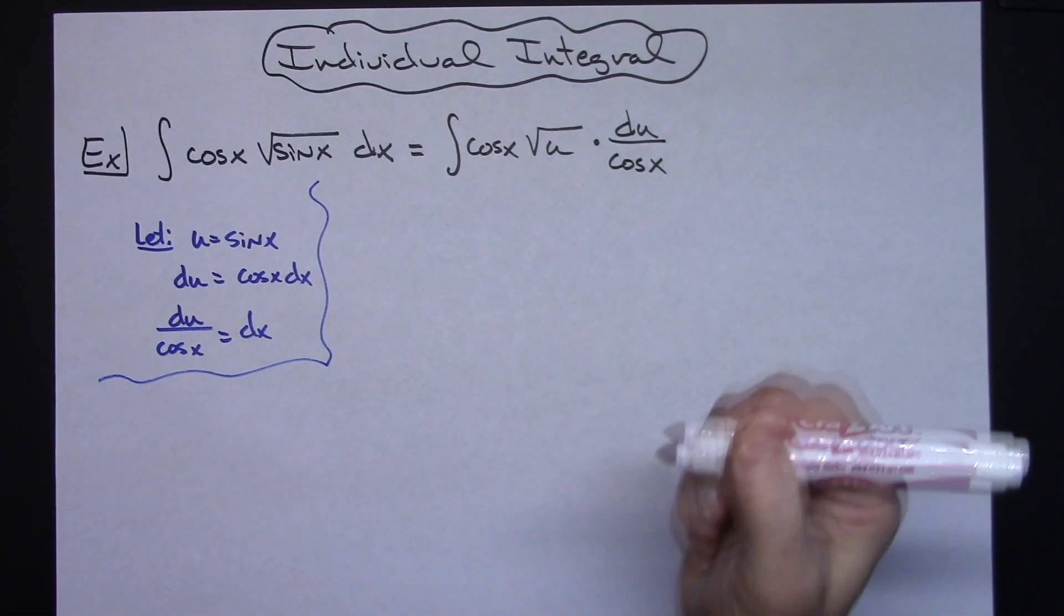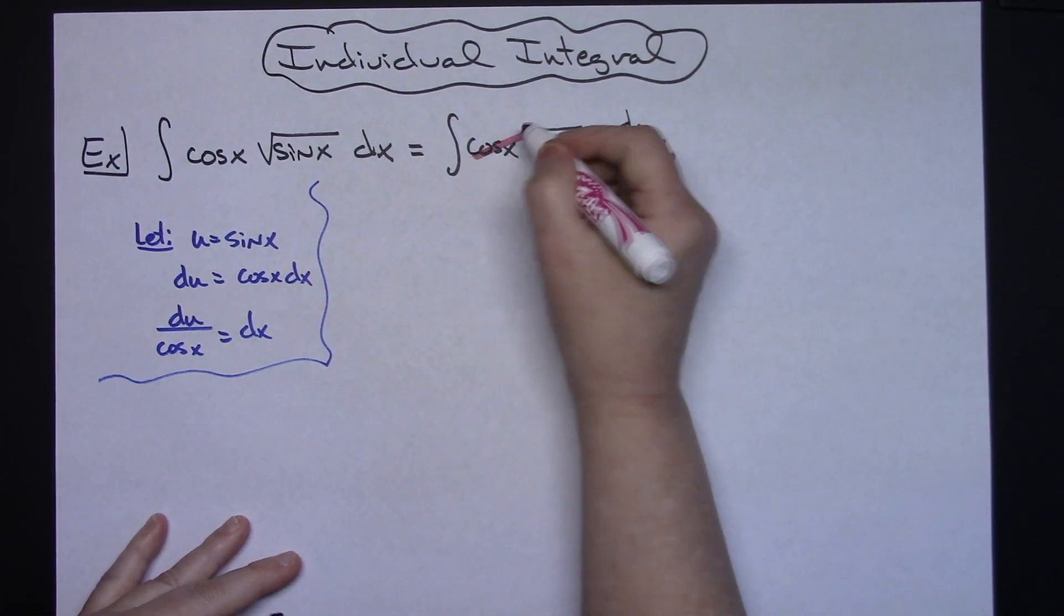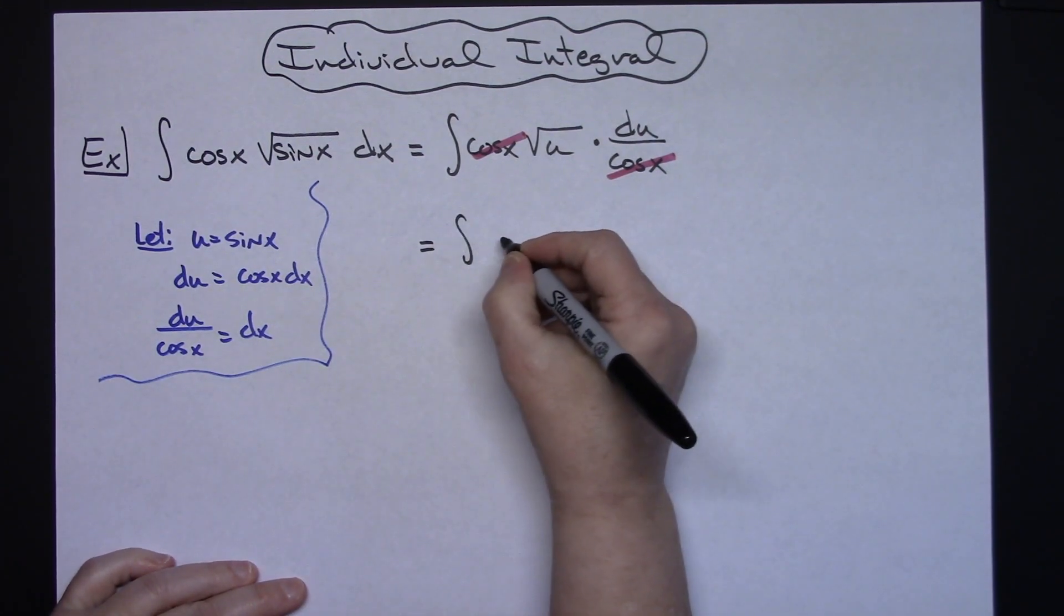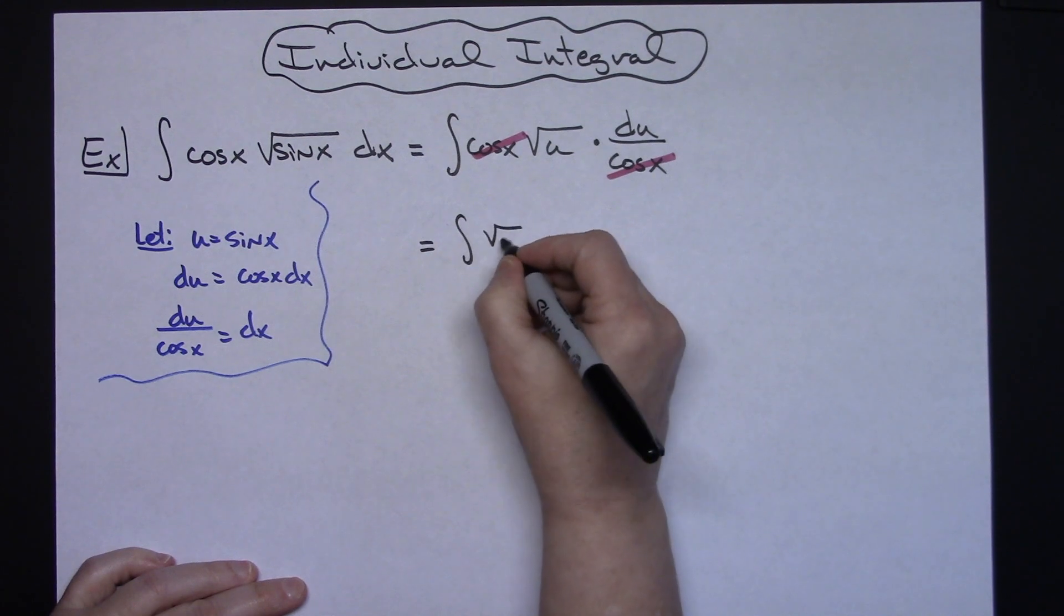That allows us then to cross out those cosine x's which is what we want because then we want an integral all in terms of u. So we'll have the integral of the square root of u du.